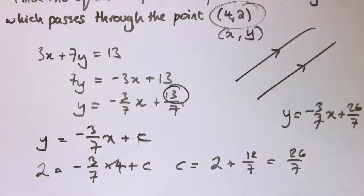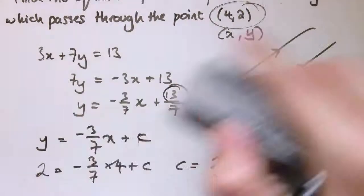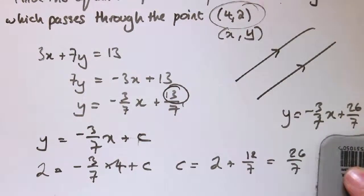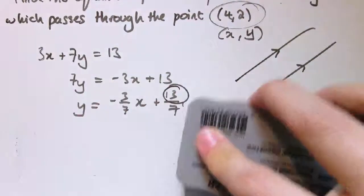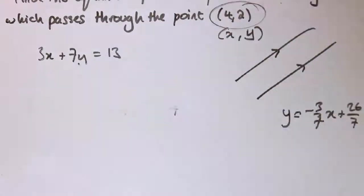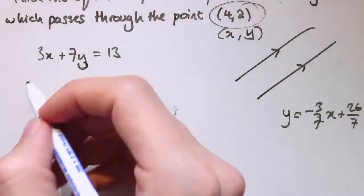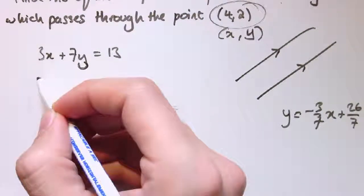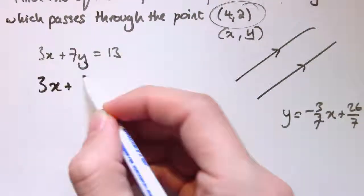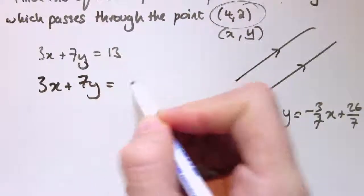But I'd argue that's a bit of a long-winded way of doing this, because given that we've noticed that just the 3 and the 7 here determine the gradient, why not just at this stage say other lines with gradient minus 3/7 are of the form 3x plus 7y equals a constant.